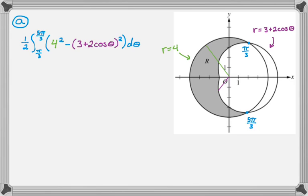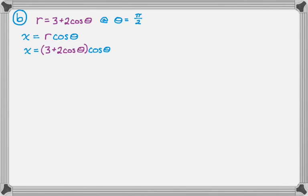So in part b we want to find the slope of the line tangent to r equals three plus two cosine theta at theta equals pi over two. So to do that we are going to need to find a lot of things. I know that x is equal to r cosine theta, which means that x is equal to three plus two cosine theta times cosine theta.